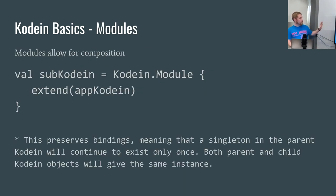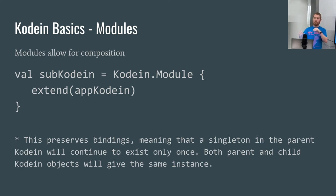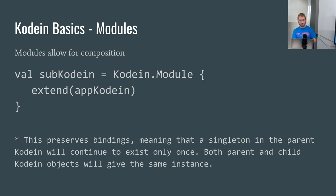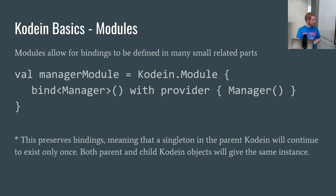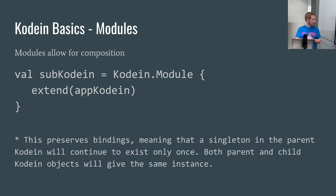The actual base Kodein code allows you to extend things as well. You can either import modules or extend them — they have different properties. But the idea is that you get the flexibility and the ability to extend modules, which is really helpful for building up the dependency graph.